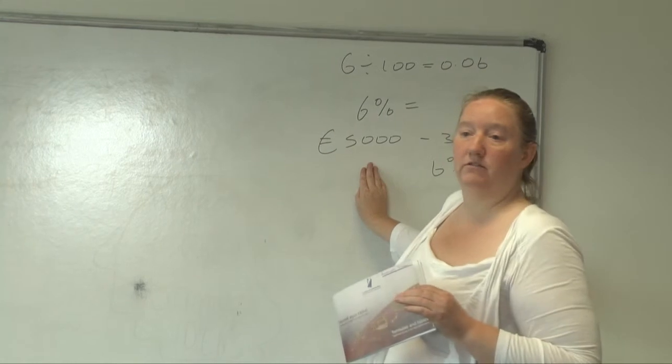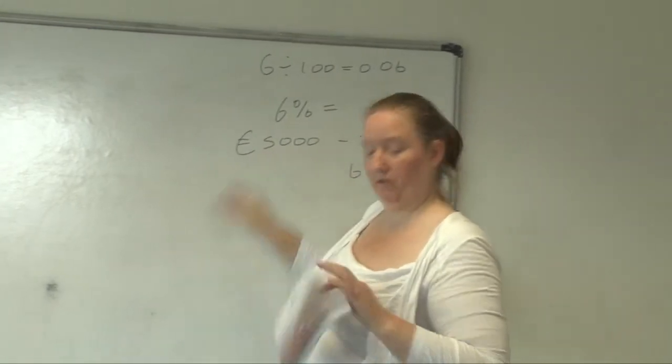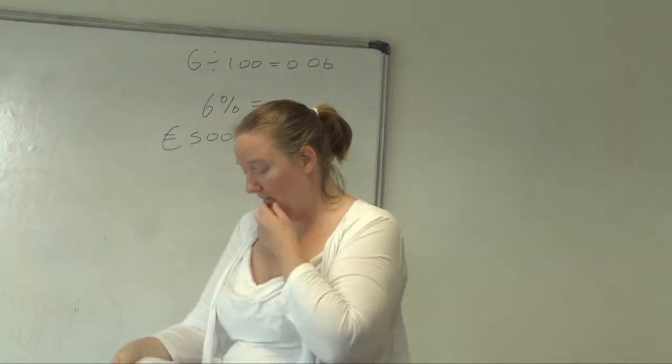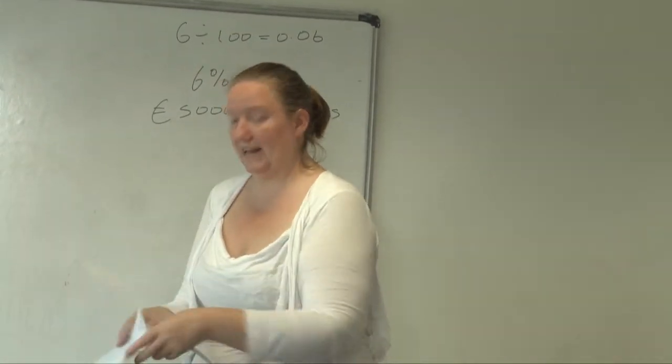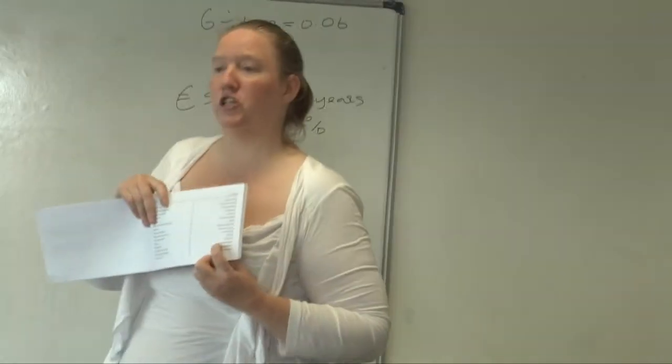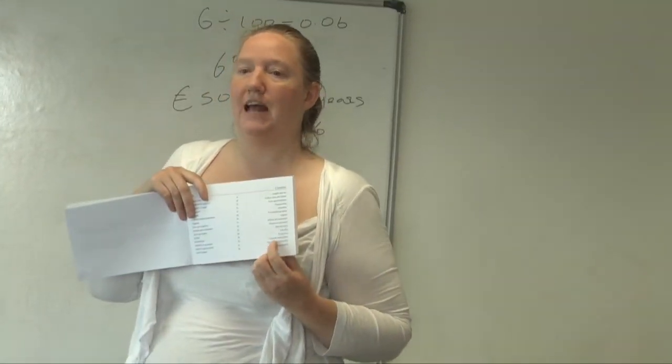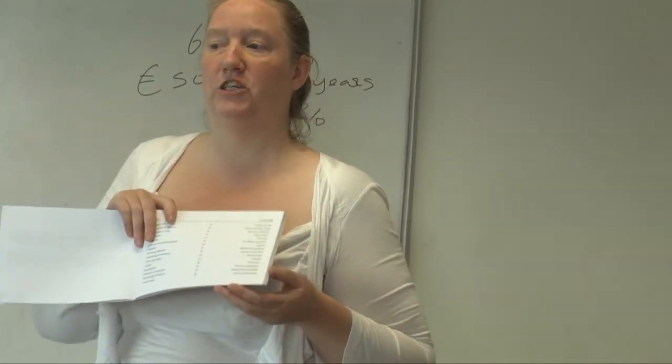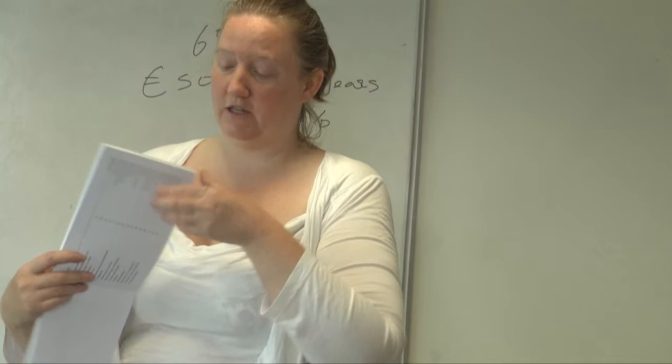This is to do with money. 5,000 euros is what you're investing. So, you go to your index. And in the index, it tells you where everything is. And you want to look for financial mathematics. Finance. It has to do with finance. So, financial mathematics. And it tells you here that's page 30. So, go to your page 30.